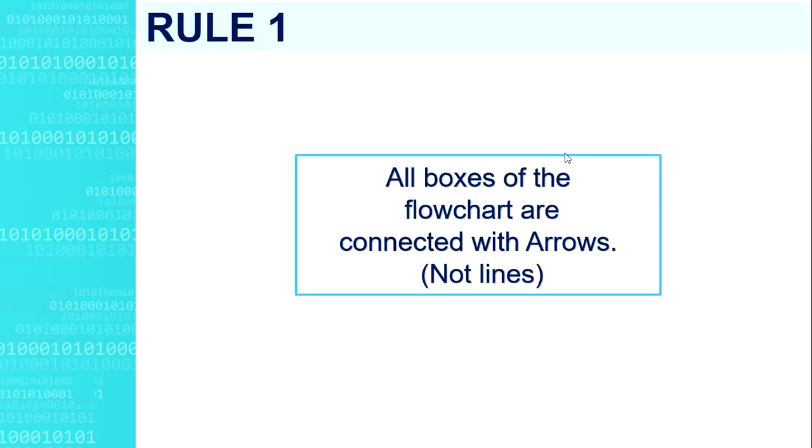Rule number one. All boxes of the flowchart are connected with arrows, not lines.